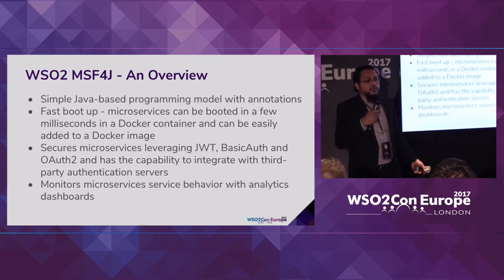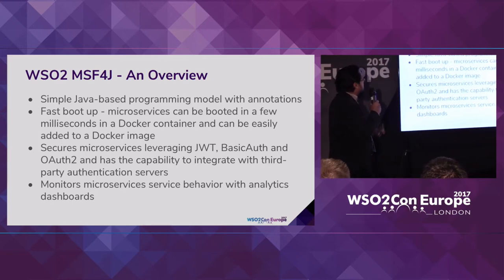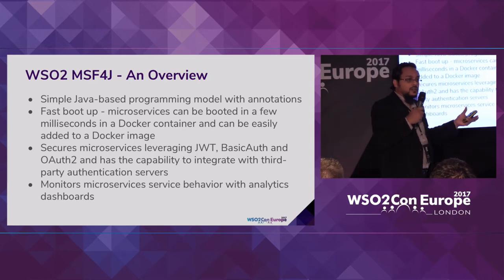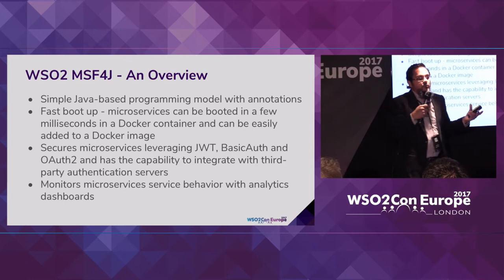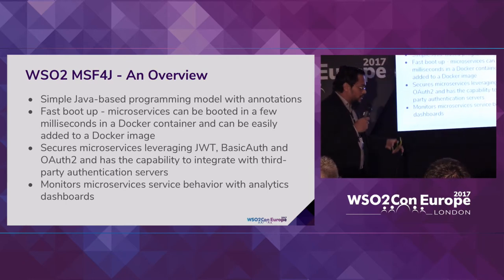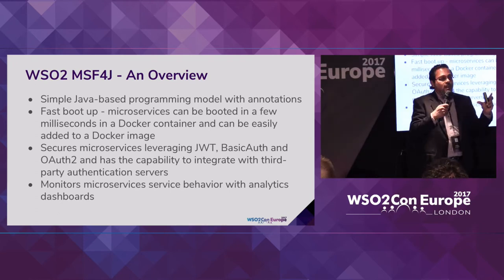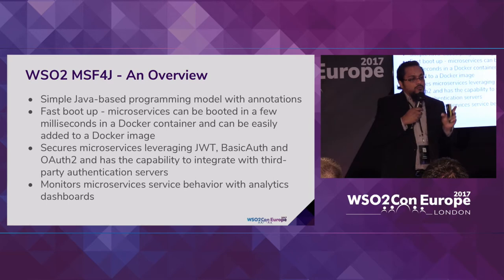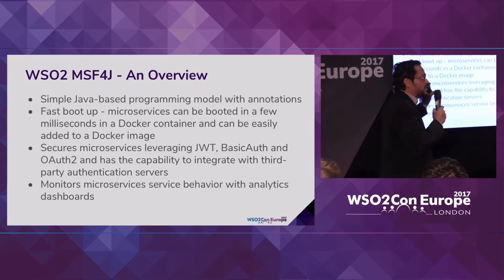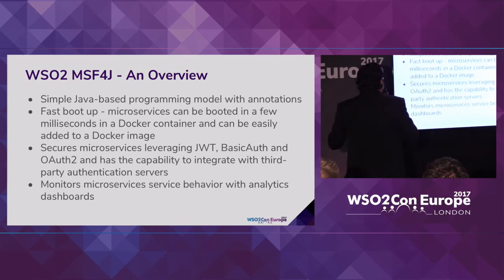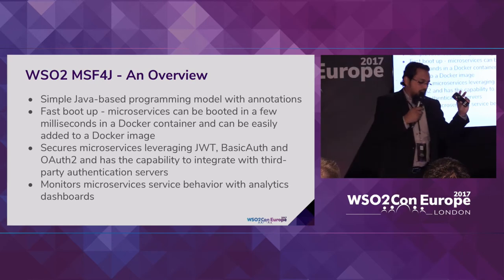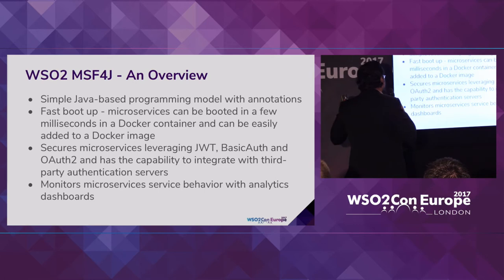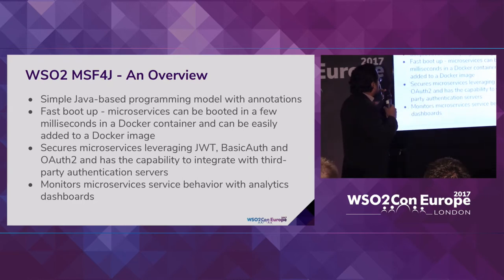We have performance numbers — our services in MSF4J can be booted up within a few milliseconds, and we are working on improving it even further. There should be security mechanisms as well. When running in a monolith, component-to-component interaction doesn't typically need to be secured — you're making Java API calls. But now you've broken it into microservices and communication happens over the network, so you need authentication, encryption, and authorization. MSF4J includes support for those specifications, and monitoring and metrics of MSF4J microservices is a key aspect of the framework.